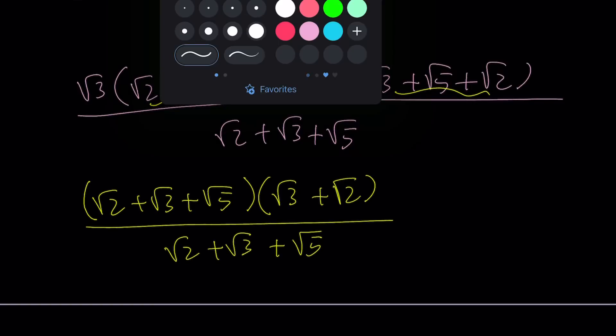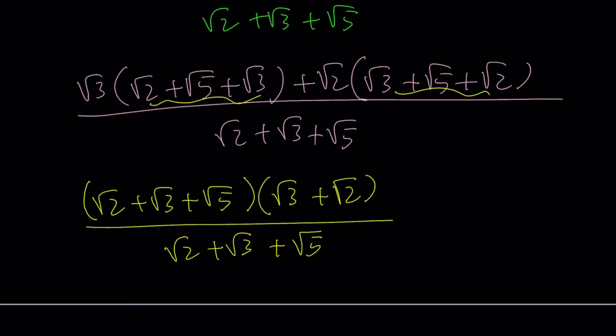What happens here? Root 2 plus root 3 plus root 5 cancel out, leaving us with root 3 plus root 2 as the simplest form of the answer. Make sense? Okay. That is the end of the first method.